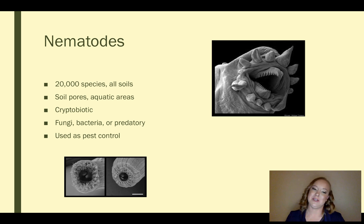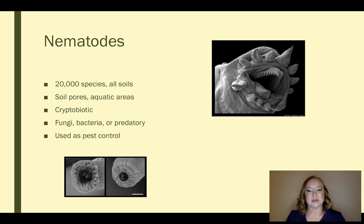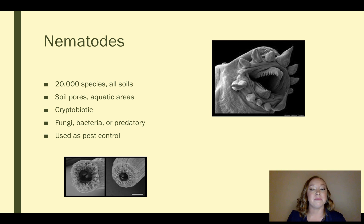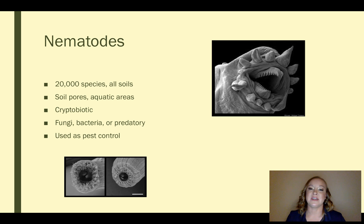Also, some nematodes have been used as pest control. Some nematodes like to munch on insect larvae, corn rootworms, and grubs, and specific species have actually been sold commercially to control those specific types of pests.